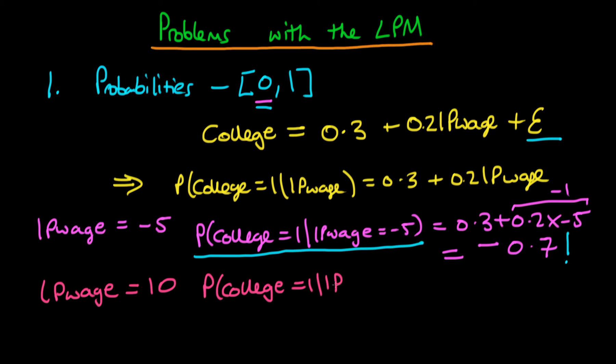...would be equal to 0.3 plus 0.2 times 10 now. And 0.2 times 10 is 2, so we're going to be left with a value of a probability which is 2.3. So clearly that is above the normal acceptable upper bound for probabilities. It's 1.3 over that limit. And because of that it's completely nonsensical.